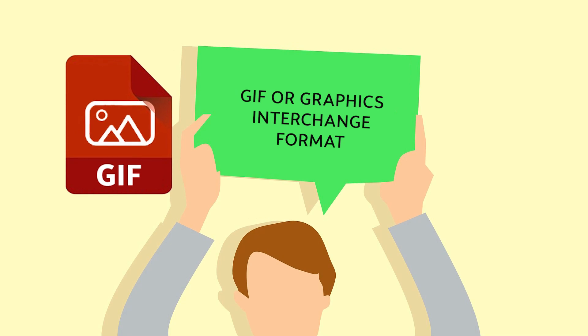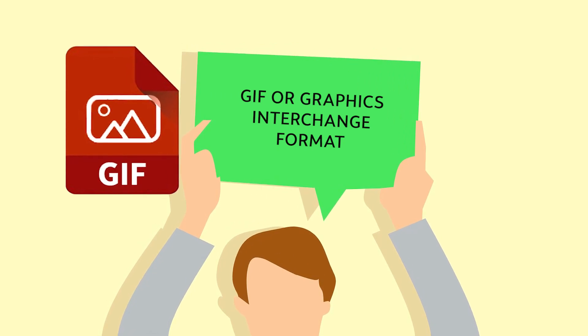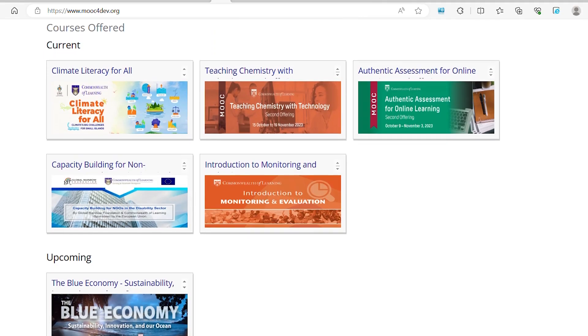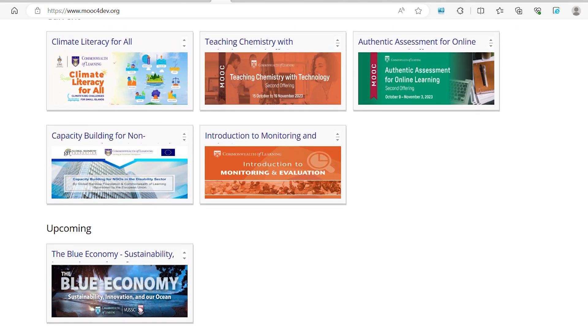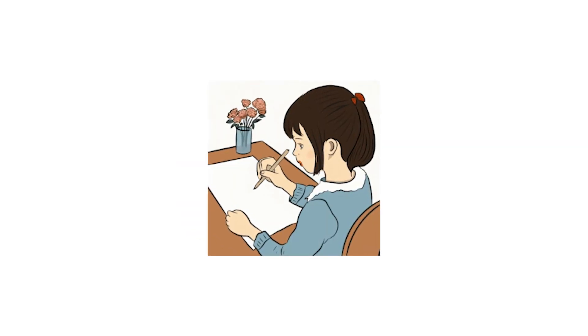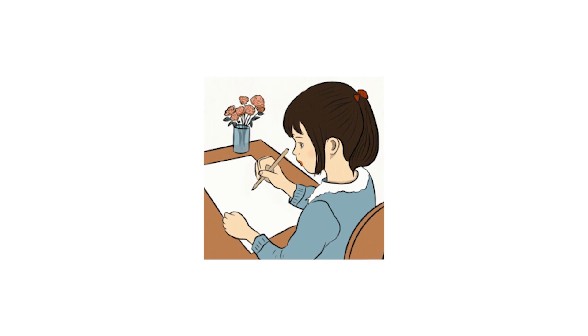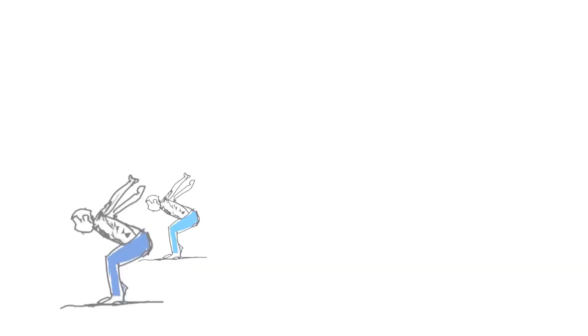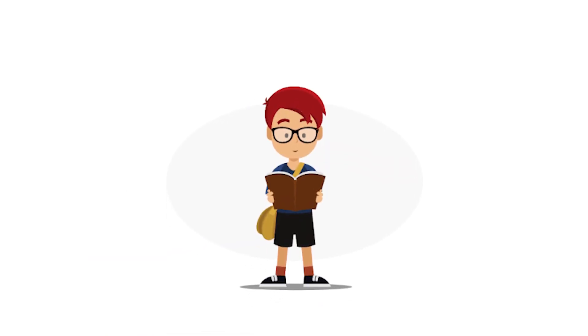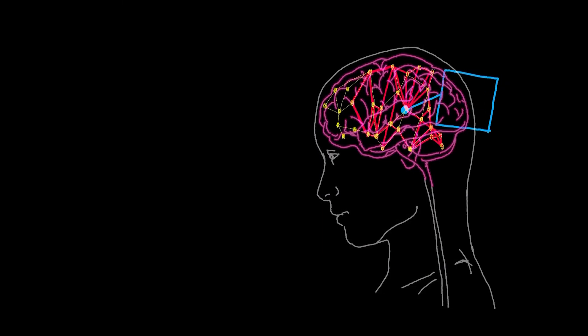GIF, or Graphics Interchange Format, files are widely used for web graphics because they are limited to only 256 colours, can allow for transparency, and can be animated. GIF files are typically small in size and very portable. They are regarded as lossless because they retain their quality after compression and are more suitable for web images.